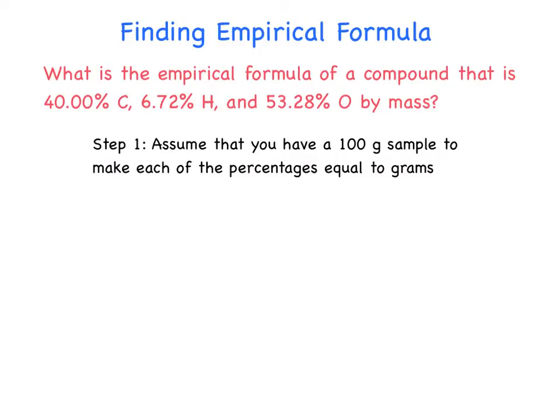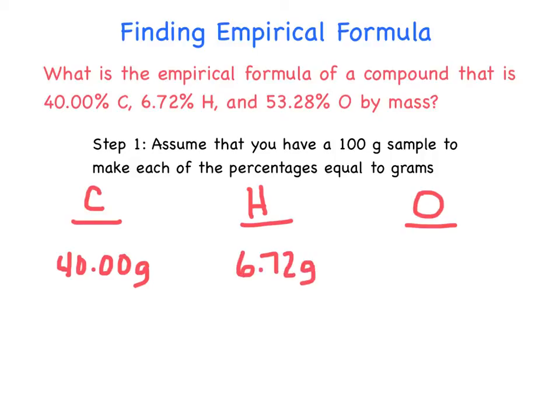So here's a typical problem that you might see for empirical formulas. What's the empirical formula for a compound that is 40.00% carbon, 6.72% hydrogen, and 53.28% oxygen by mass? So step one, breaking it down step by step, assume that you have a 100-gram sample to make each of the percentages equal to grams. Here's what I really like to do. I like to just put carbon, hydrogen, and oxygen. And so what we have to start out with is 40.00, and instead of percent, we're going to call it grams. If we had a 100-gram sample, it would be 40 grams. This is going to be 6.72 grams, and oxygen is going to be 53.28 grams. That's our starting point.